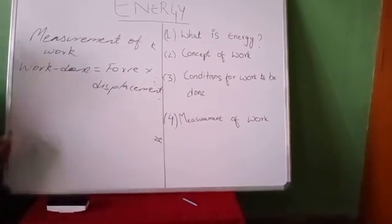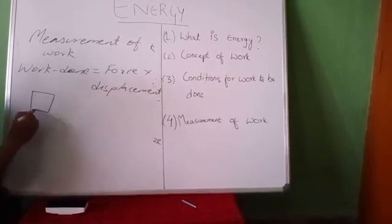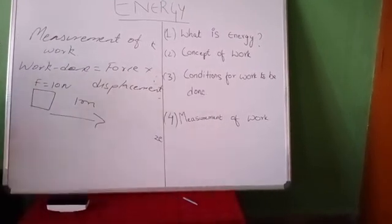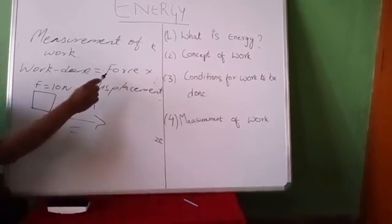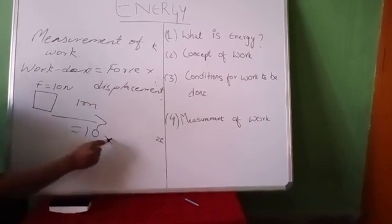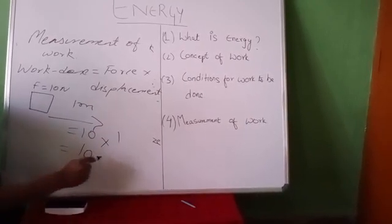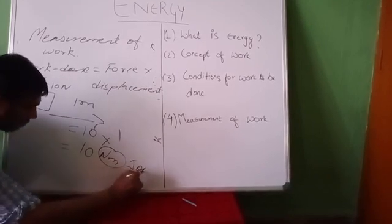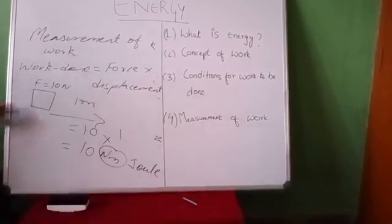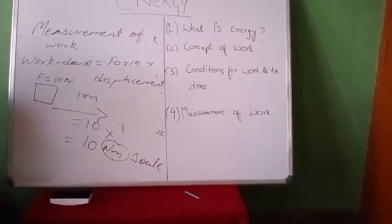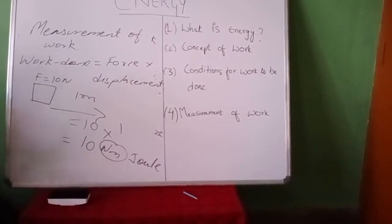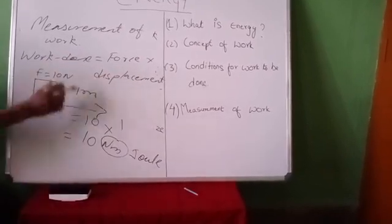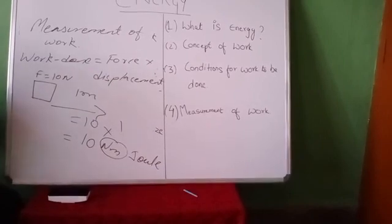Work done equals force into displacement. Let's consider one example. Suppose you apply a force of 10 Newton and an object covers a distance of 1 meter. How much is the work done? Work done = force × displacement = 10 × 1 = 10 Newton meter. And this Newton meter for work done — we replace it with Joule. So work done is 10 Joule.